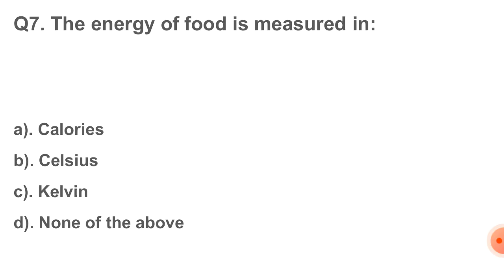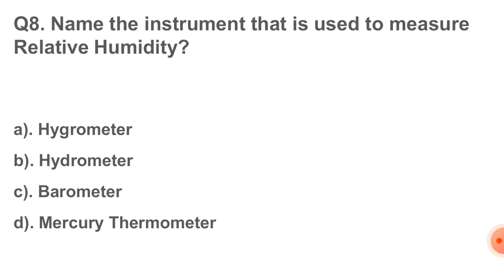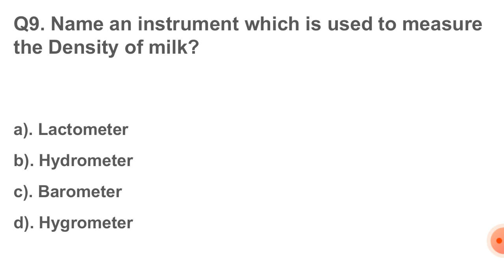Next question: the energy of food is measured in. Correct answer is option number A, that is calories. Next question: name the instrument that is used to measure relative humidity. Correct answer is option number A, that is hygrometer. Next question: name an instrument which is used to measure the density of milk. Correct answer is option number A, that is lactometer.